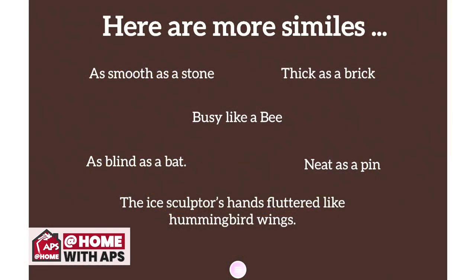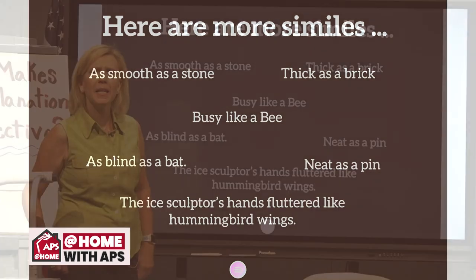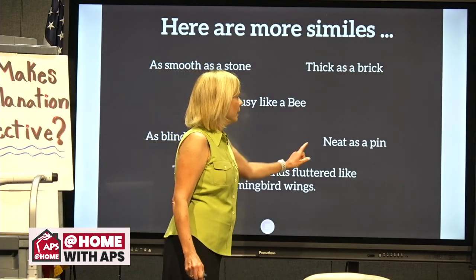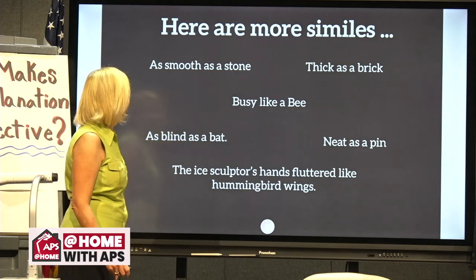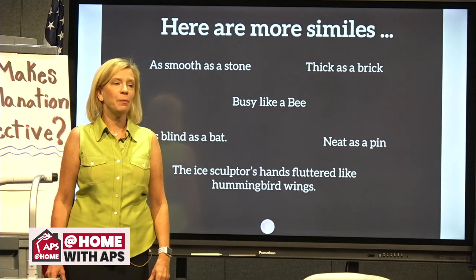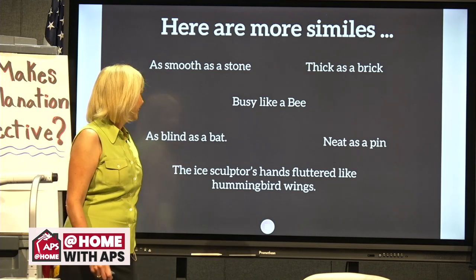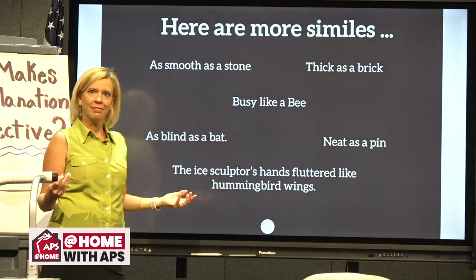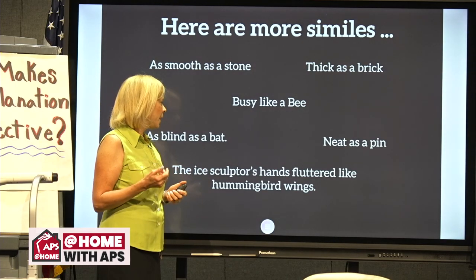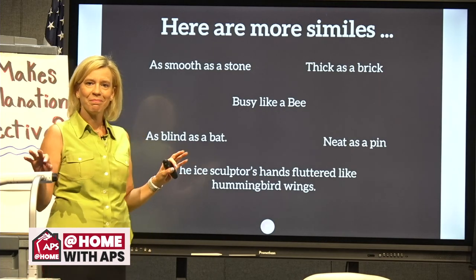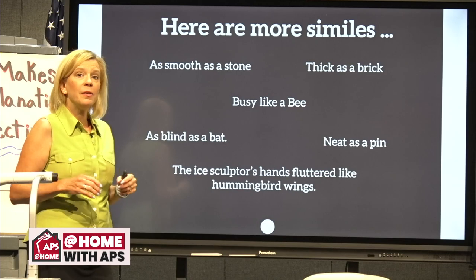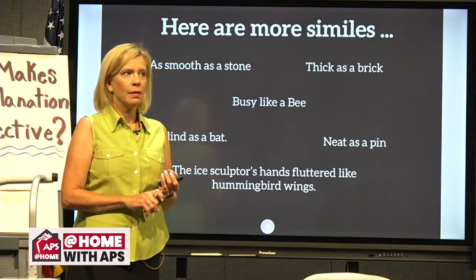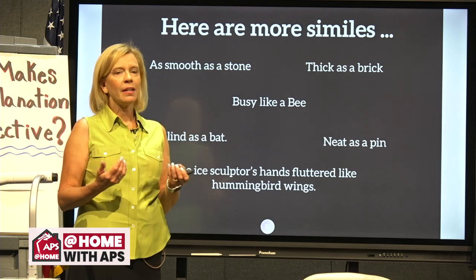Let's look at some more. Have you ever said something is as smooth as stone? How about busy like a bee? Thick as a brick? Do you keep your room neat as a pin? As blind as a bat — I've been told that when I don't have my glasses on. And then we take those short similes and create a longer one: 'The ice sculptor's hands fluttered like a hummingbird's wings.' It's beautiful. Similes can make an image come alive in fiction and nonfiction.